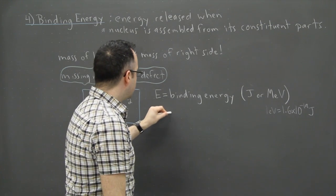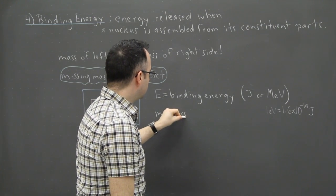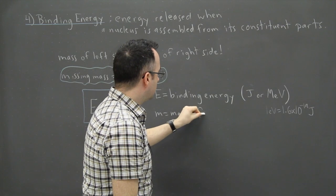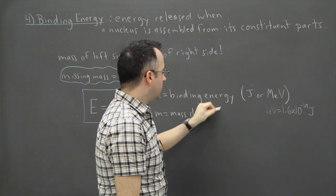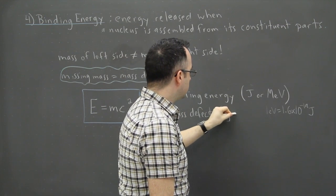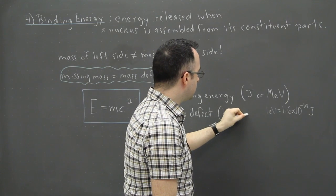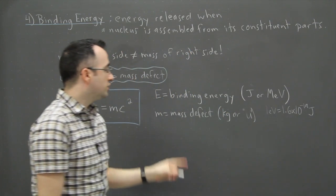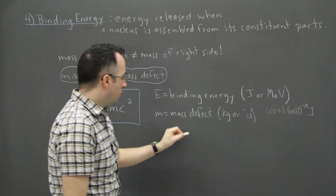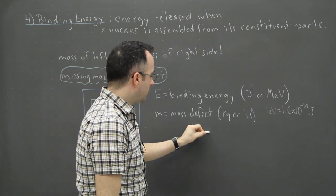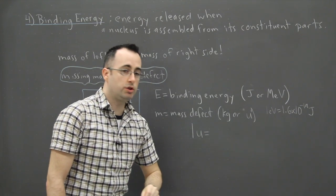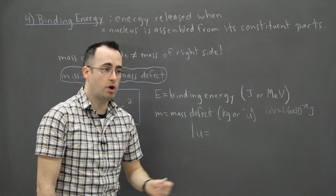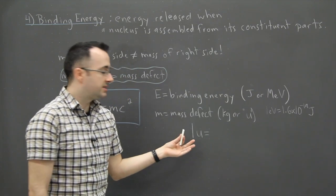M is the mass defect. And you might think that that should be measured in kilograms, but actually a more useful thing is to measure it in U. So let's talk about this actually. So 1U, that's actually called, sometimes it's called a unified mass unit or atomic mass unit.